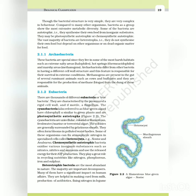Eubacteria, or true bacteria - there are thousands of different types. They are characterized by the presence of a rigid cell wall and, if motile, a flagellum. The cyanobacteria, also referred to as blue-green algae, have chlorophyll and are similar to green plants and are photosynthetic autotrophs. The cyanobacteria are unicellular, colonial or filamentous freshwater, marine or terrestrial algae. The colonies are generally surrounded by gelatinous sheath. They often form blooms in polluted water bodies. Some of these organisms can fix atmospheric nitrogen in specialized cells called heterocysts, e.g., Nostoc and Anabaena.